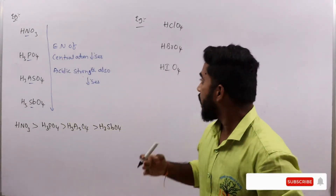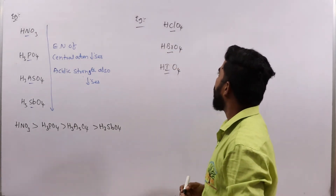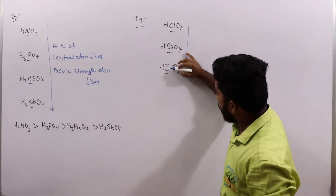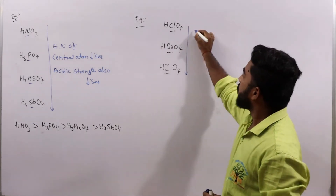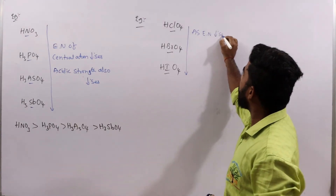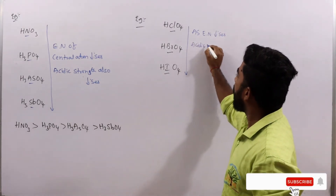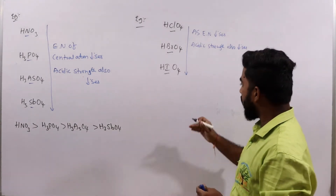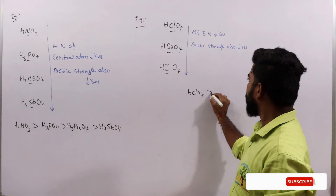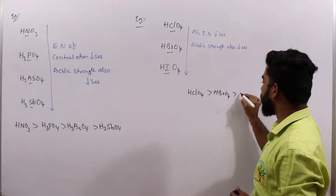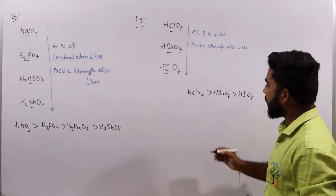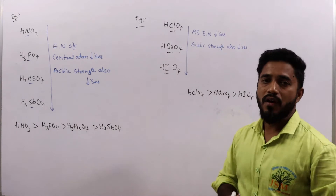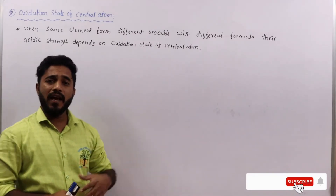Next example: HClO4, HBrO4, and HIO4, with central atoms chlorine, bromine, and iodine. From chlorine to iodine, electronegativity decreases. As electronegativity of the central atom decreases, acidic strength also decreases. Therefore, the correct order is HClO4 is most acidic, then HBrO4, then HIO4. HClO4 releases H+ ions most easily.